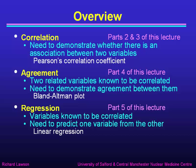In part 4 of this lecture, I'm going to be talking about agreement. That's when we have two related variables that are known to be correlated, but we need to demonstrate whether there is agreement between them. And I'll show you how to use the Bland-Altman plot for that purpose.